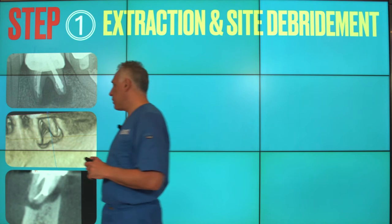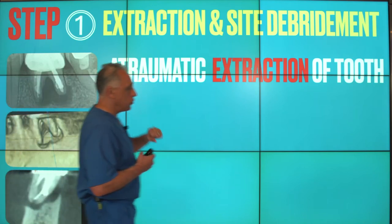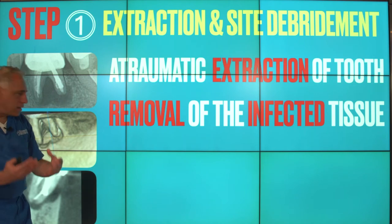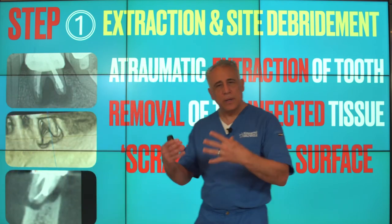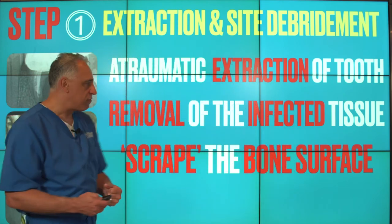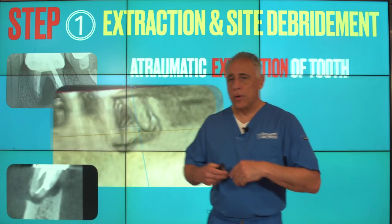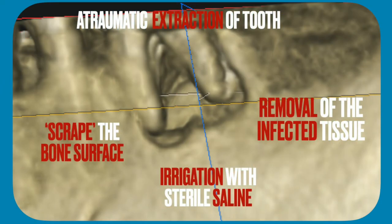Step one is extraction and site debridement. First, we remove the tooth atraumatically. Next, we remove the infected tissue by excising the inflammatory granulation tissue thoroughly from the site. Because of this chronic infection, it is not unusual to have necrotic bone in the socket, so it's important to do a gentle scraping of this necrotic bone to achieve a better, healthy foundation. We also irrigate the area with copious amounts of sterile saline. The four main components of step one are: atraumatic extraction, removal of infected tissue, thorough scraping of the bone to remove necrotic tissue, and irrigation to clean the area thoroughly.